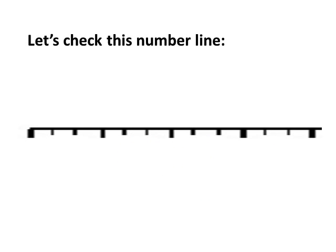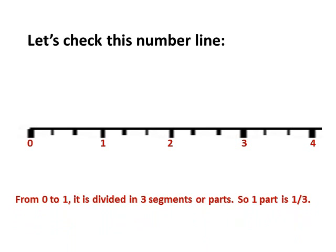Let's try to do that. With this number line, we mark the biggest parts: zero, one, two, three, and four. Looking closely from zero to one, it is divided into three parts or three segments. So remember our lesson on fractions — if you have one whole and it's divided into three parts, one part is called one third. There's an arrow from zero to that first small line — that's one segment, the second segment, and the third segment. From zero to one there are three jumps or three smaller parts. The first segment from zero we call one third, the second would be two thirds, and when you reach one, that would be three thirds.